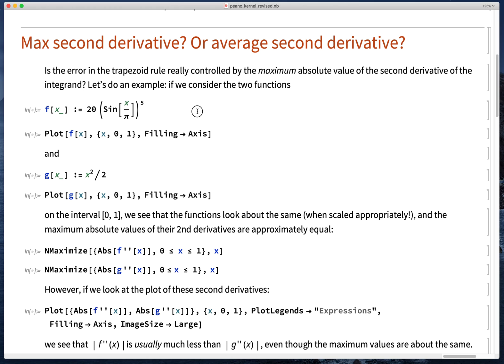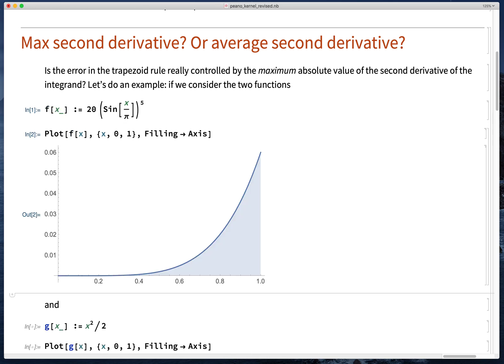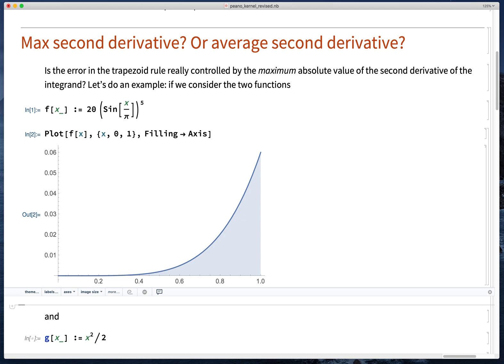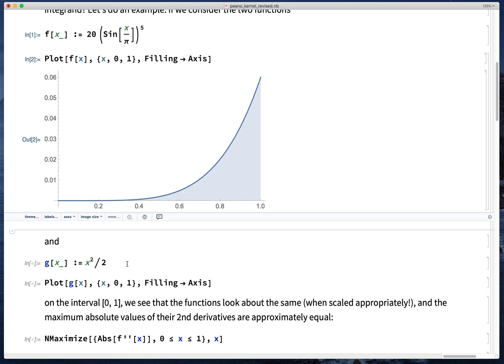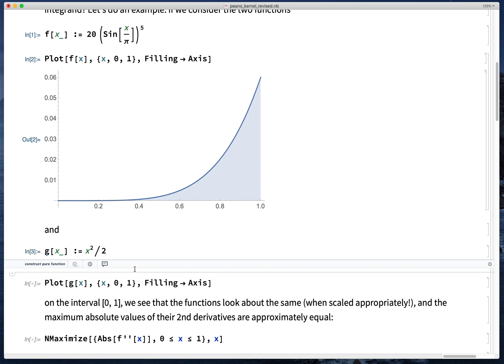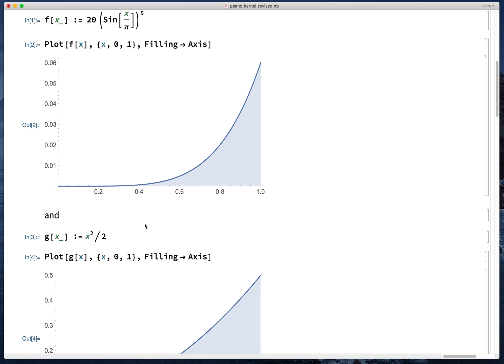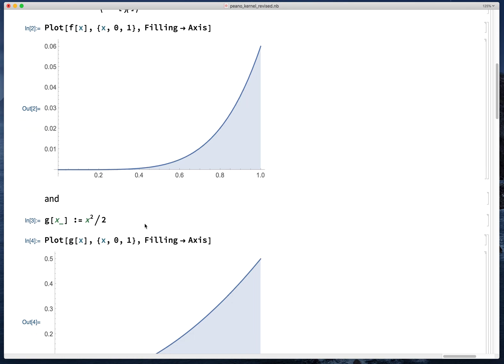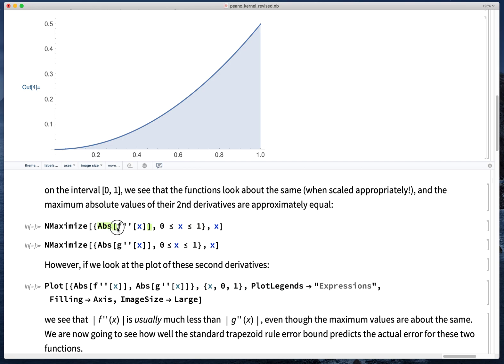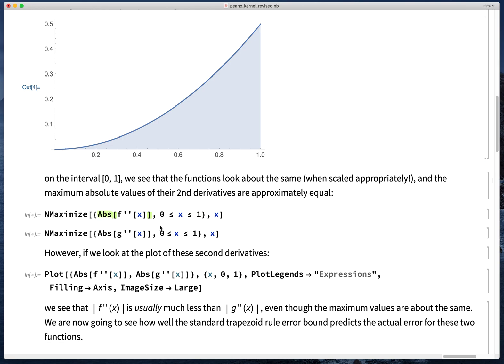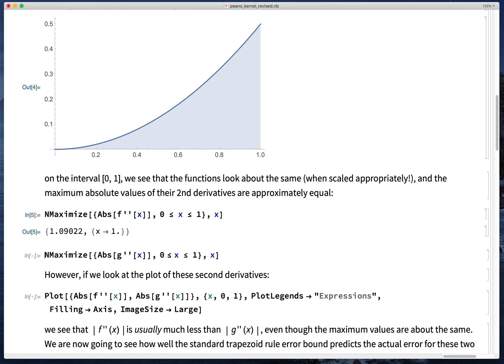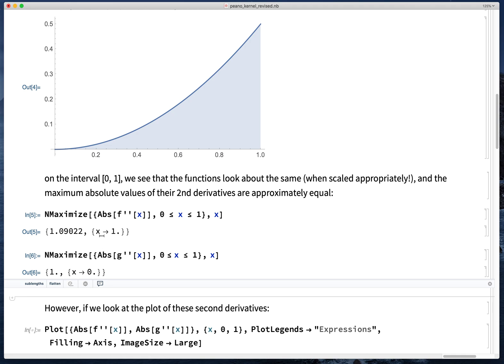So we're going to do an example to explore that. Here's a function f that is 20sin(x/π) to the fifth, and here's a parabola g(x) = x²/2. They don't look that different. They are concave up functions, and if we look at the maximum absolute values of their second derivatives, we see in both cases they're close to one.